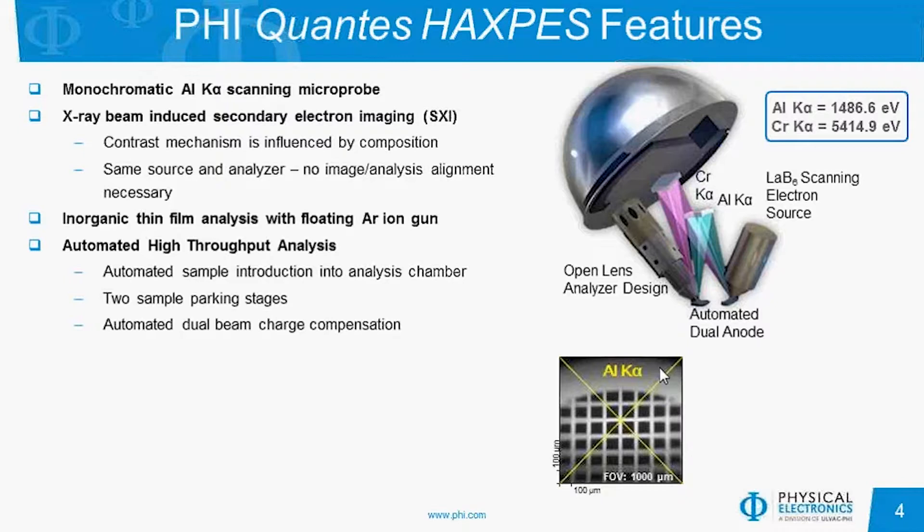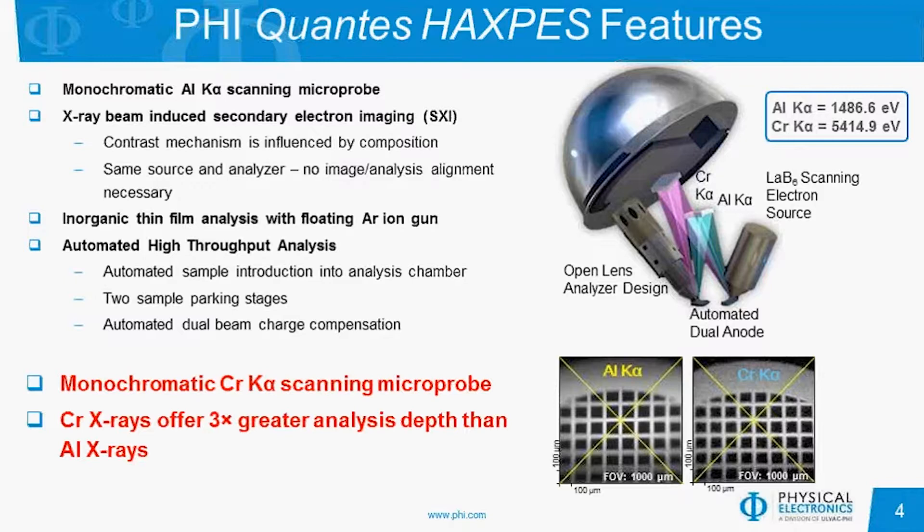In addition, both instruments are equipped with a floating monoatomic argon gun for inorganic thin film analysis, and both instruments have high throughput analysis. For example, there is automated sample introduction into the analysis chamber, two ultra-high vacuum parking locations, and automated dual-beam charge compensation for studying insulating samples. All of these features are the same technology as the QUANTERRA 2 platform, but the difference in the QUANTES is that it has an additional hard X-ray source.